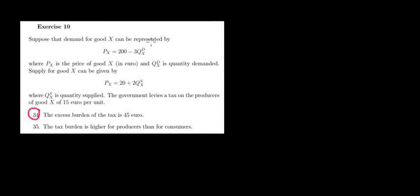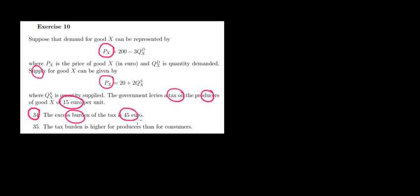Let's solve question 34 now. We have the demand for good X represented by a function — the price that consumers are willing to pay. We also have the supply for good X — the price that producers and sellers are willing to sell. The government puts a tax on the producers of 15 euros per unit. The excess burden of this tax is stated to be 45 euros. Is that true or false?